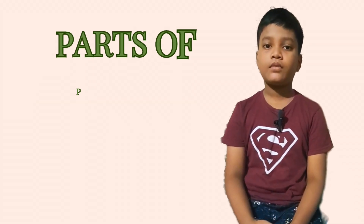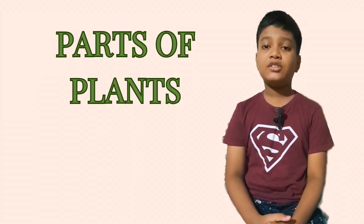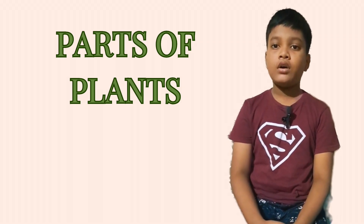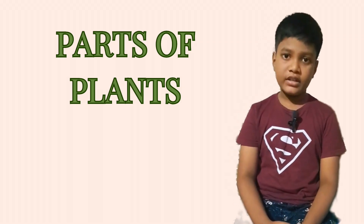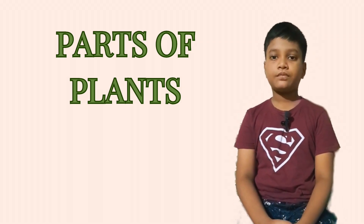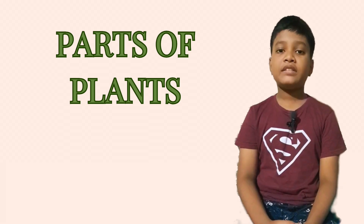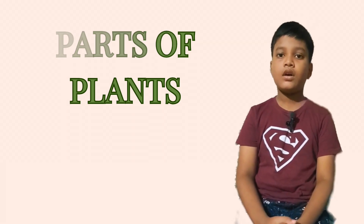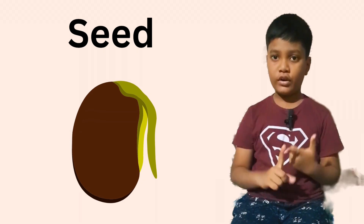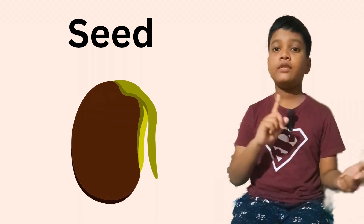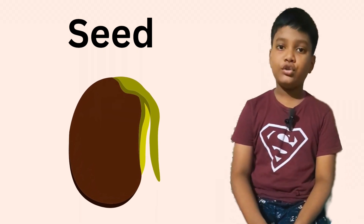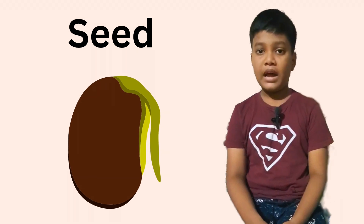Parts of a plant. Some parts of the plant grow above the ground. Other parts grow under the ground. Most plants start their life as a seed. A seed needs air, water, and warmth of the sunlight to grow into a new plant.